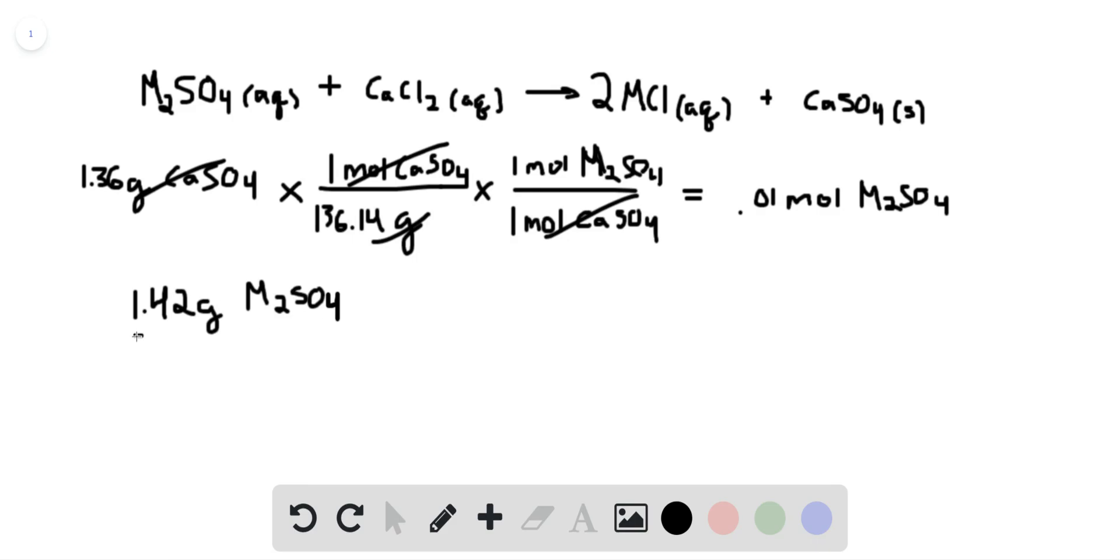And if we divide this number by the number of moles that we know were in there, 0.01 moles of M2SO4, we can figure out the molar mass.